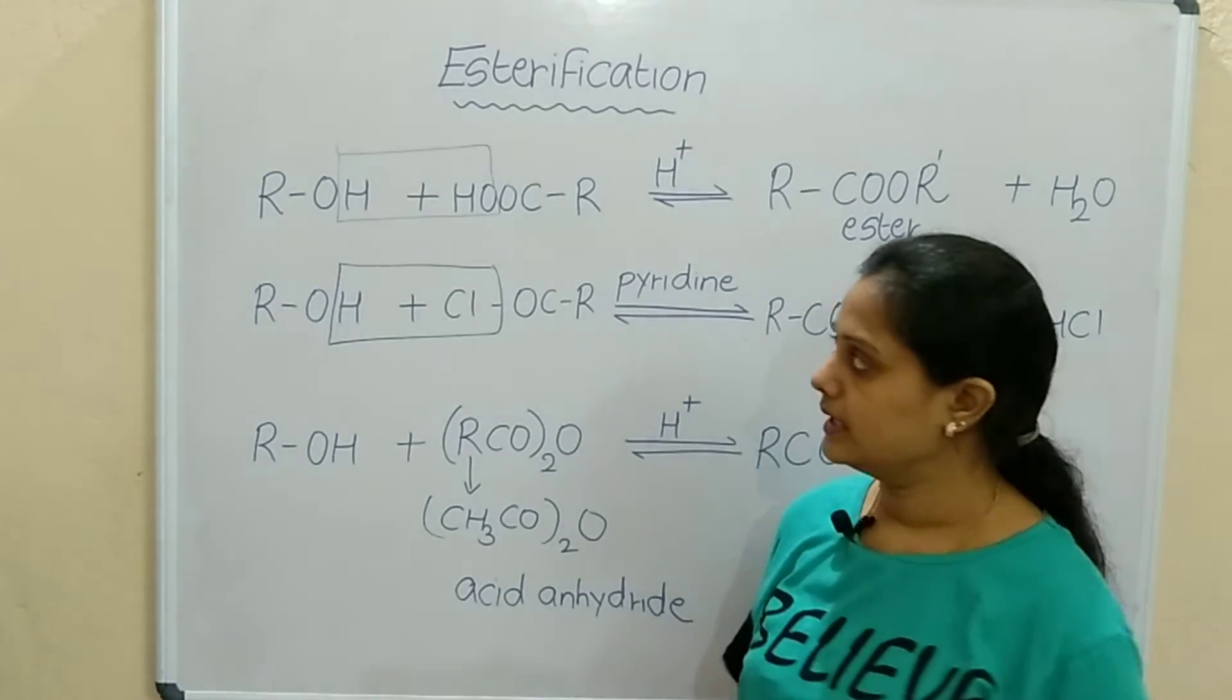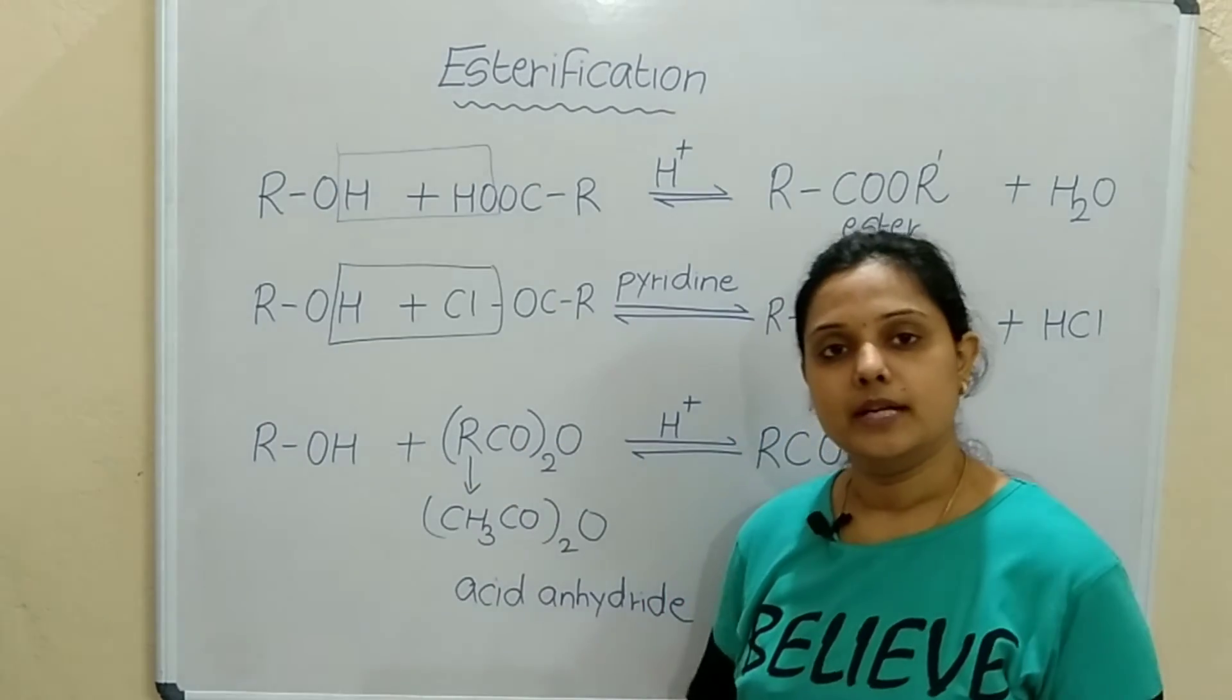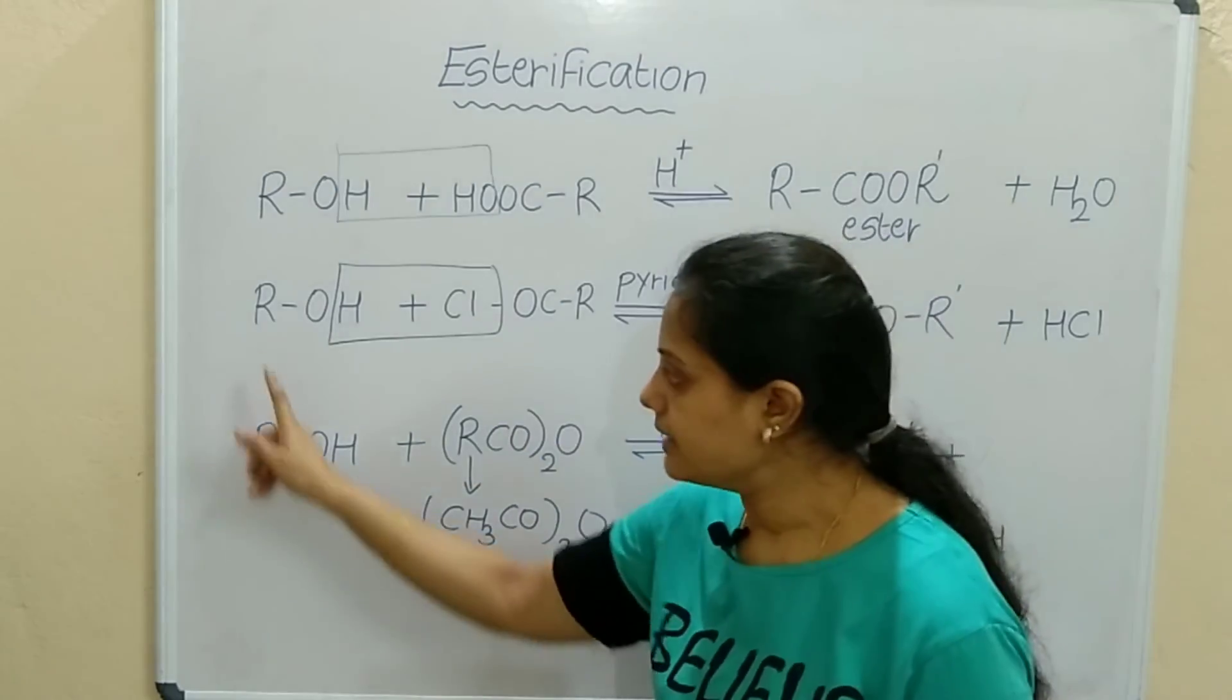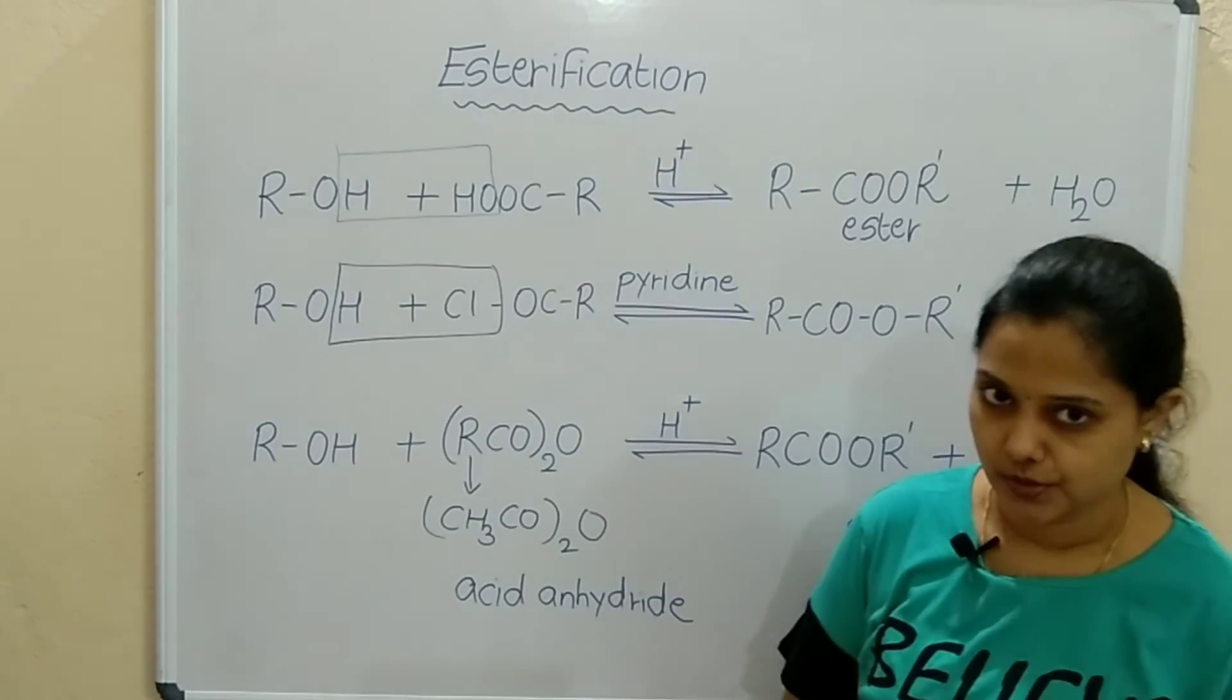In case of alcohols it is the alkyl groups, but in phenols the R will be the benzene ring. So the same reaction for phenols also.